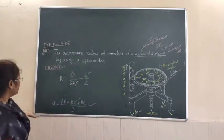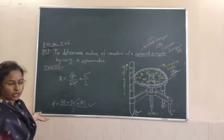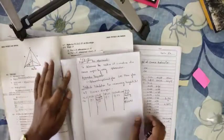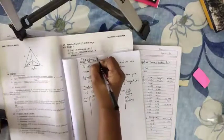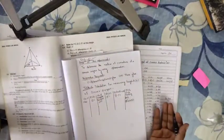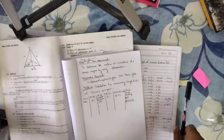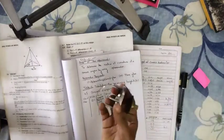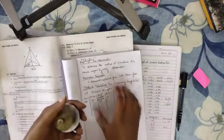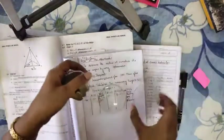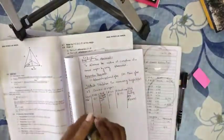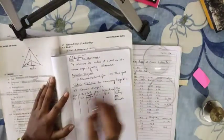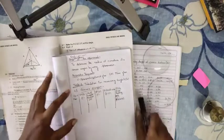Now let's look at the tabulation part. For experiment number five, how will we take observations? We need three apparatus: the spherometer, the curved glass, and the plane glass. We will first look at the first tabulation, which is the tabulation for measuring the height of the convex surface.